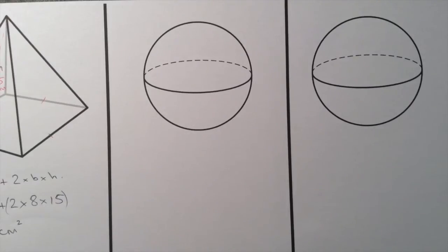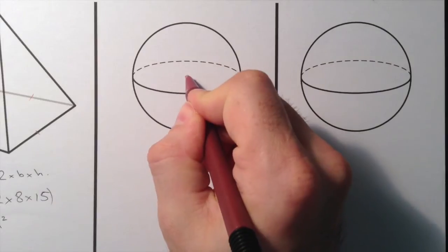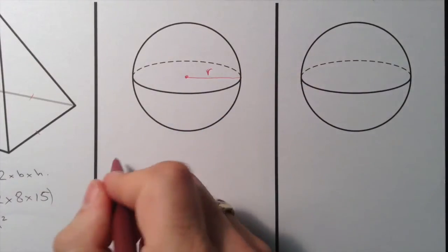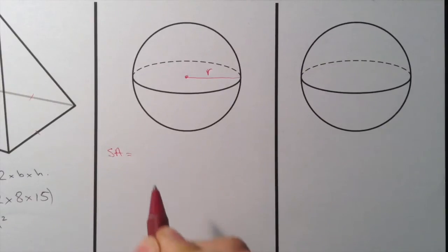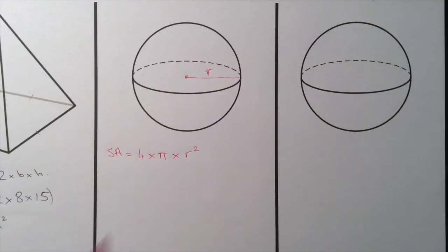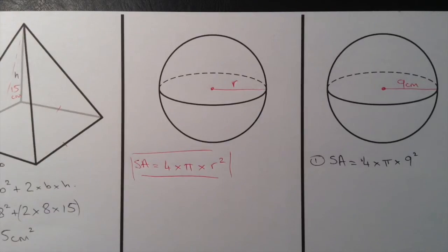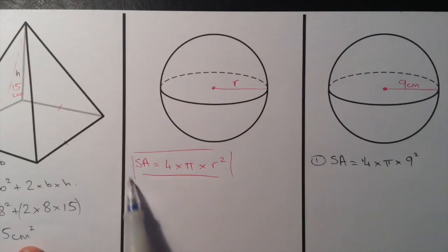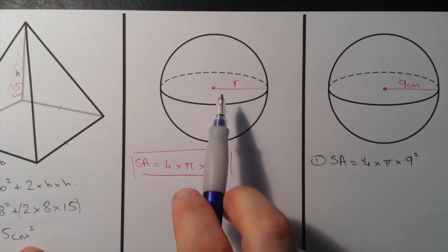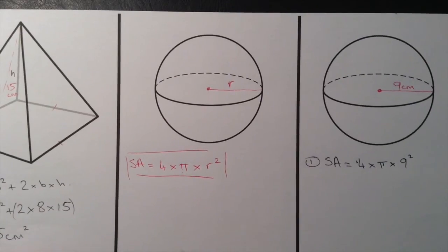The very last shape we're going to look at is our sphere. With a sphere it's very simple — all we need to know is the radius. Going from the centre of the sphere out to one side, that is our radius, and that's all we need to calculate the surface area. The formula is: surface area equals 4 times pi times the radius squared. We need pi because we're dealing with circles.